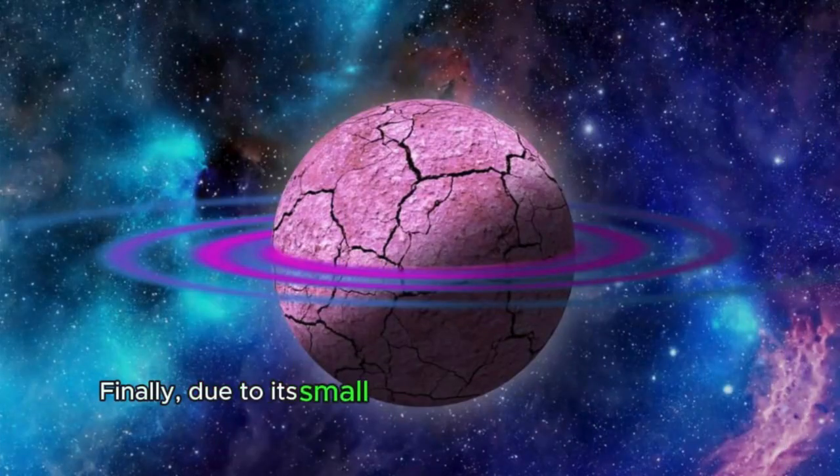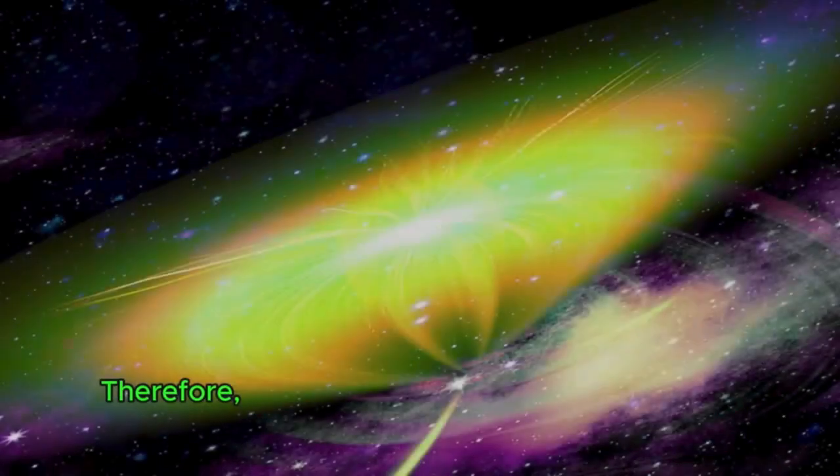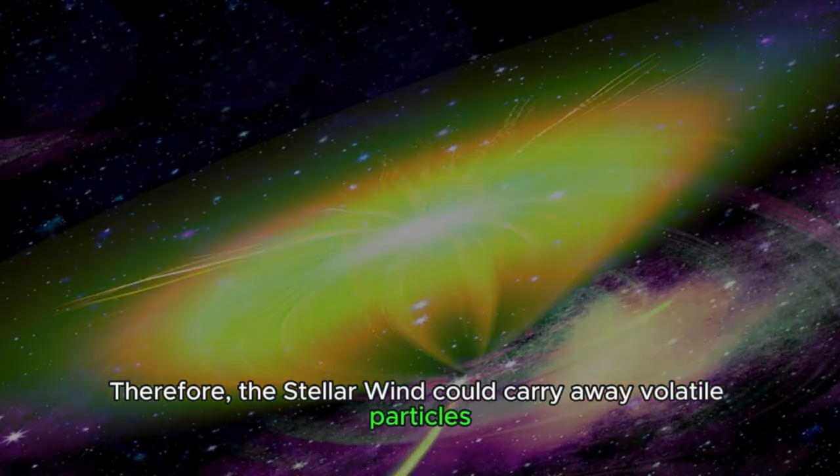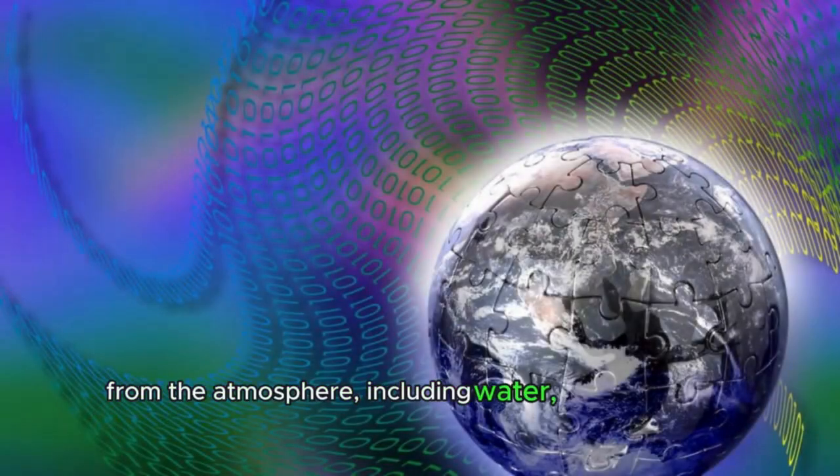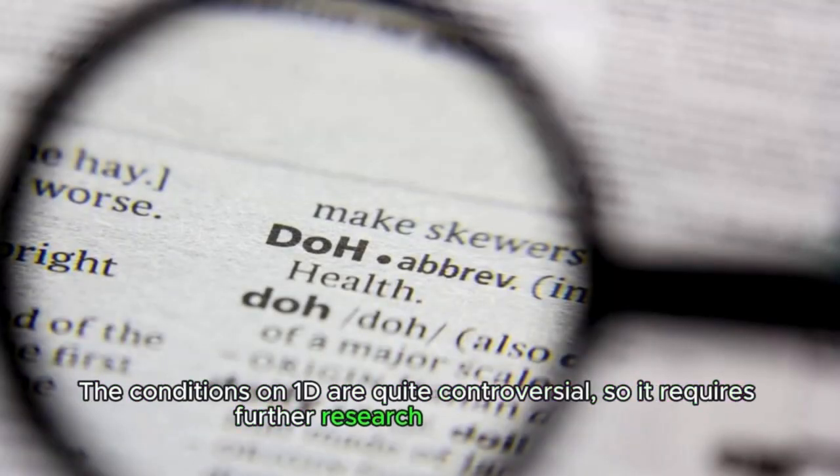Finally, due to its small size, the planet may not have a magnetic field. Therefore, the stellar wind could carry away volatile particles from the atmosphere, including water, as it may have happened with Mars. The conditions on 1d are quite controversial, so it requires further research from scientists. But the fourth planet in the TRAPPIST-1 system presents the greatest interest to the scientific world.